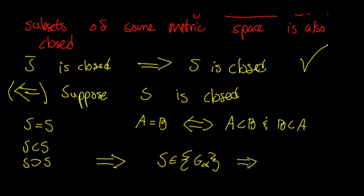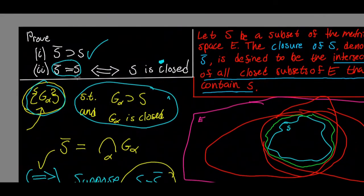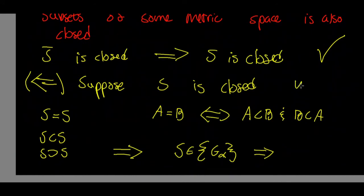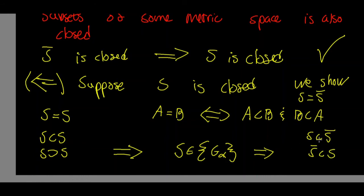Therefore, S is in the collection of closed subsets of the metric space E that contain S, because S is a closed subset and contains itself by definition of set equality. We've already shown in the previous video that S is contained in the closure of S, so all we have left to show is that the closure of S is contained in S — that is, if X is in the closure of S, then X is in S.